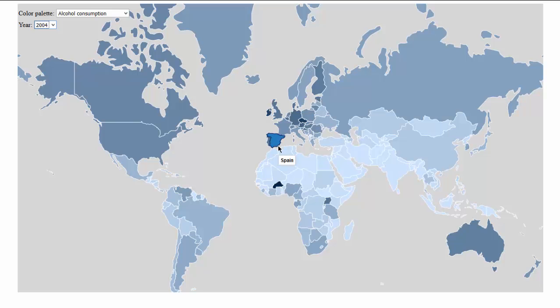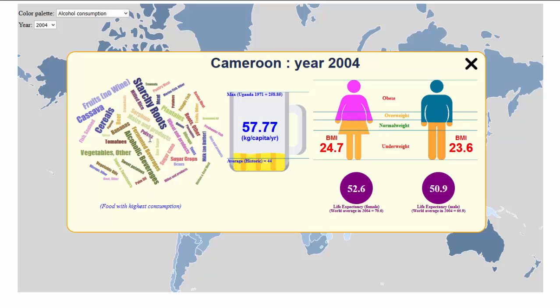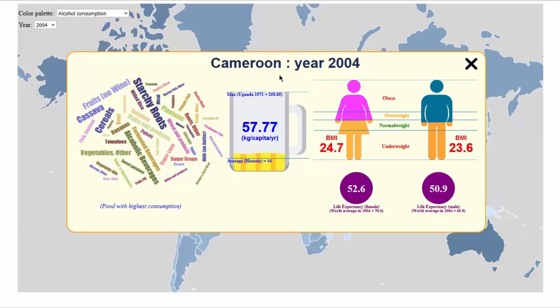As a conclusion, this visualization tool is quite useful for comparing different countries. The word cloud is a really easy way to see information in a short period of time, along with the other components. For instance, you can search and see that starchy roots are the most consumed food in Cameroon during the year 2004. This can also be useful for suppliers to know which countries they can approach to sell their products. Thanks for watching.